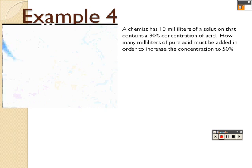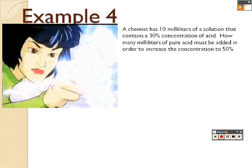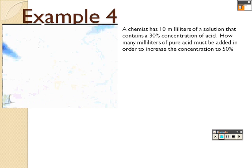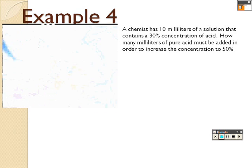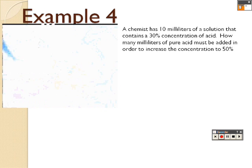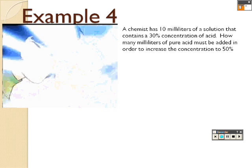Try to do as many of these examples, try some odd problems in the book as well in order to truly catch on with these problems. A chemist has 10 milliliters of solution that contains a 30% concentrate of acid. How many milliliters of pure acid must be added in order to increase the concentration to 50%?